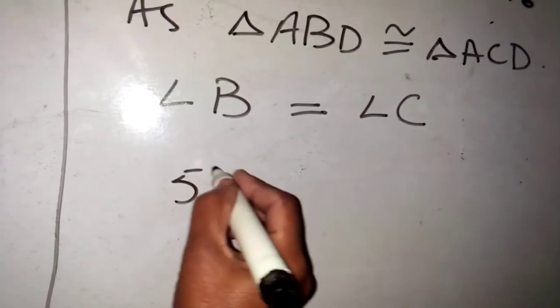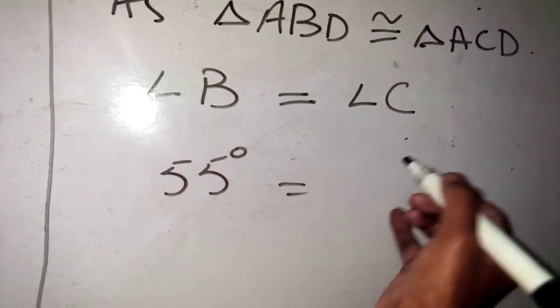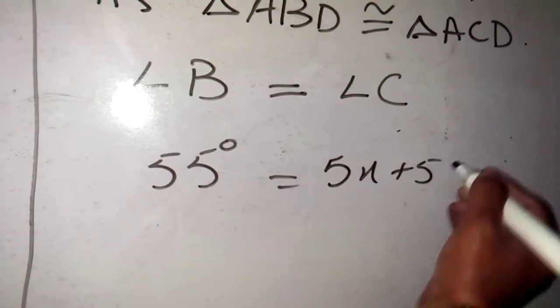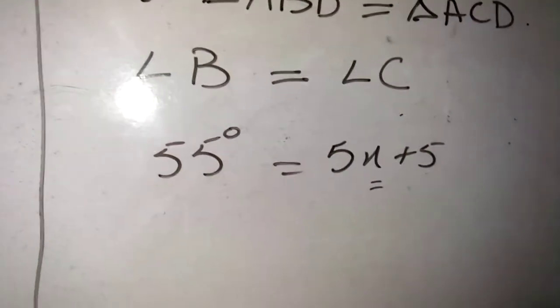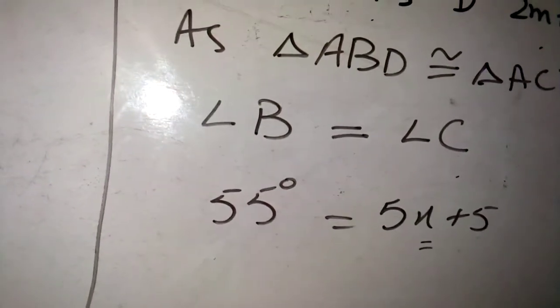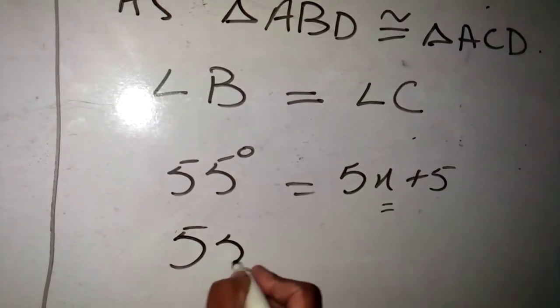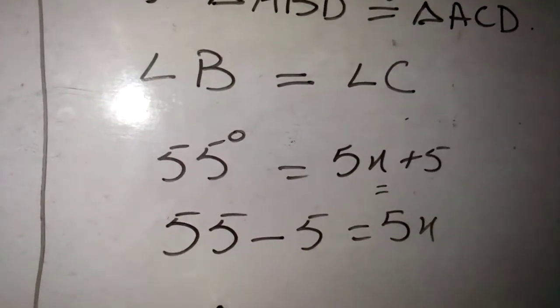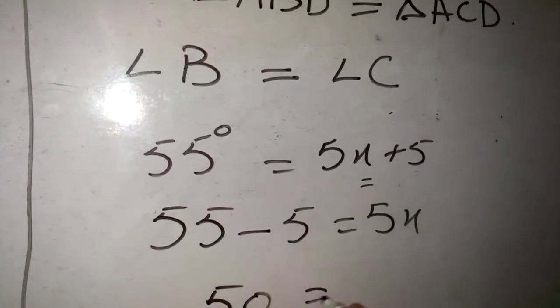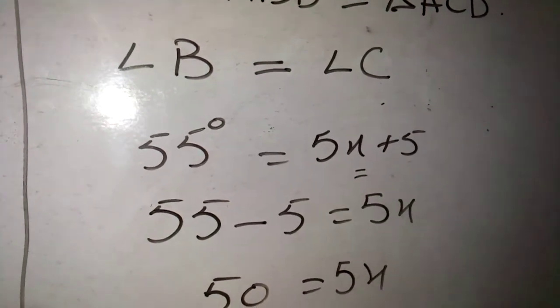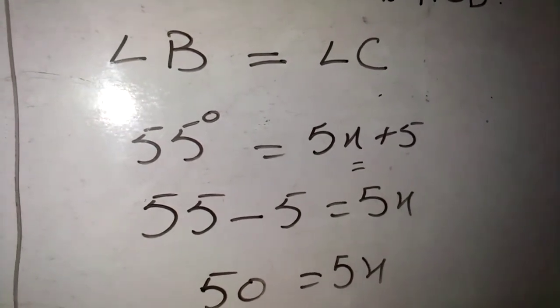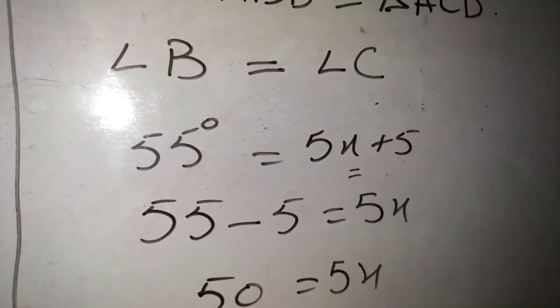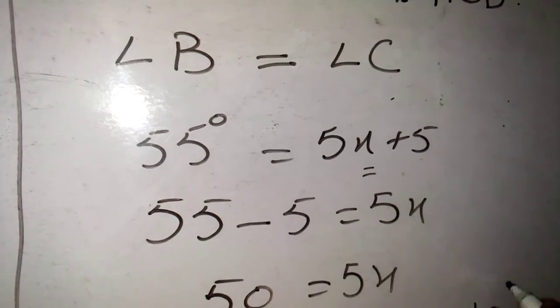The value of angle B is 55 degrees when angle C is 5x + 5, and x is unknown. We will shift 5 to the other side and get 50 equals 5x. X will equal 50 divided by 5, which equals 10 degrees.